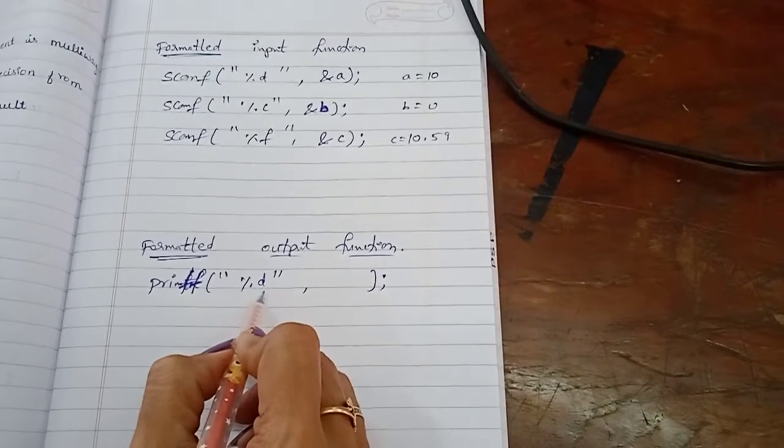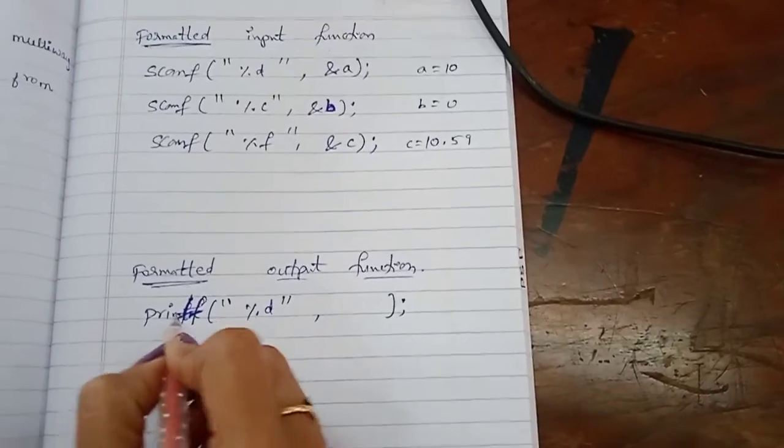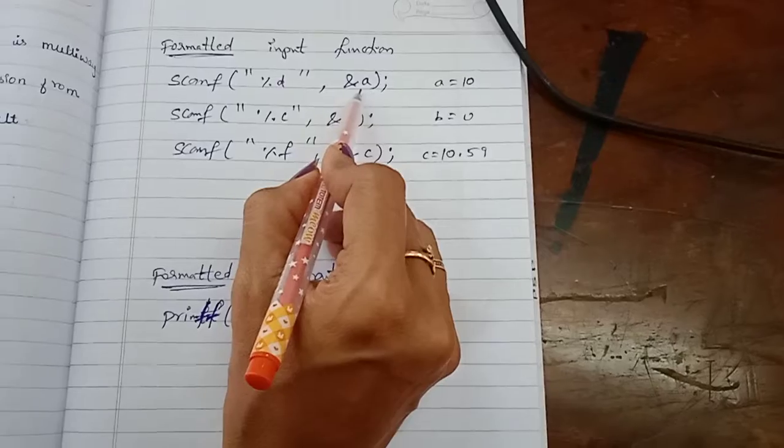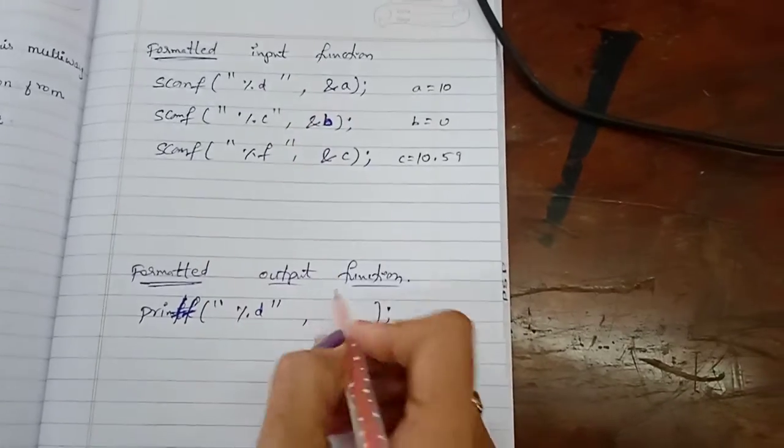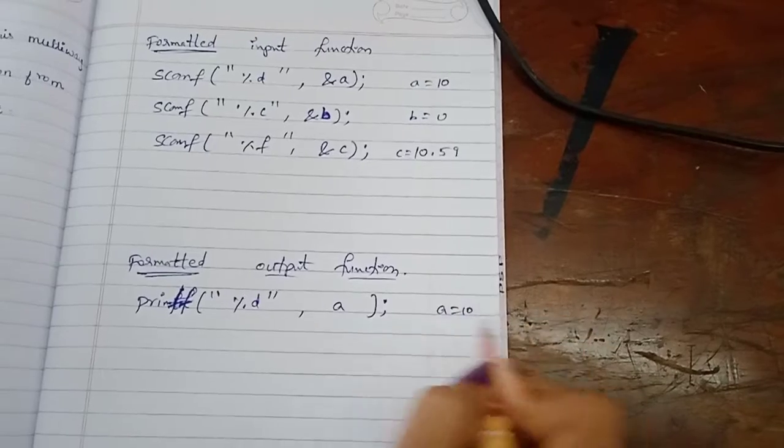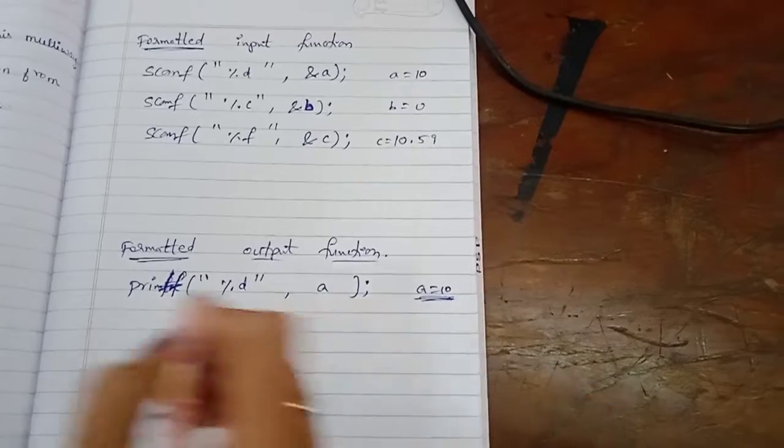Inputting, suppose if you already inputted integer data type, and the same variable whichever you are using through input function, the same variable should be used to print as it is the value of A. Now it will print A value is 10 on the output screen.